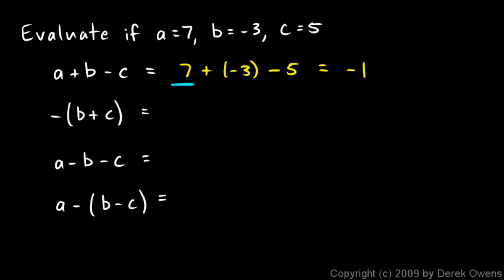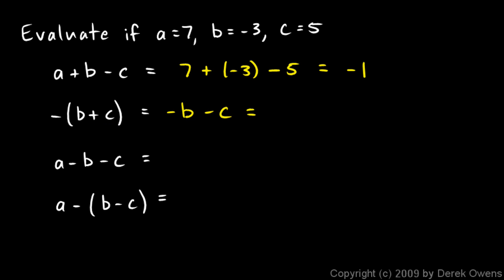You could also think of this as 7 to the right, and then here we have 3 and 5, both negative — a total of 8 to the left. 7 in the positive direction and 8 in the negative direction leaves us with a total of 1 in the negative direction. The next one: negative (b plus c). Let's distribute the negative sign: this will be negative b minus c. Plugging in numbers: negative negative 3 minus 5. Negative negative 3 is just 3, the opposite of negative 3. So we have 3 minus 5, which equals negative 2.